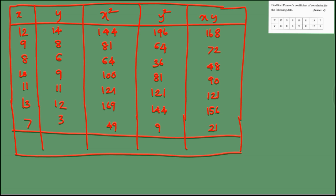Now we add all columns. We get: Sigma X = 70, Sigma Y = 63, Sigma X² = 728, Sigma Y² = 651, and Sigma XY = 676.